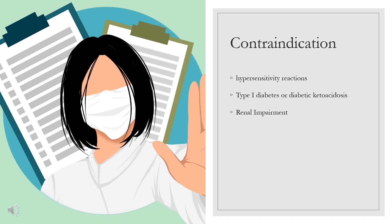Contraindication: Gemagliptin tablet 50 mg is contraindicated in patients with a history of serious hypersensitivity reactions — i.e., angioedema or anaphylaxis — to another dipeptidyl peptidase-4 (DPP-4) inhibitor, type 1 diabetes, or diabetic ketoacidosis. Regarding renal impairment, no dose adjustment is required.